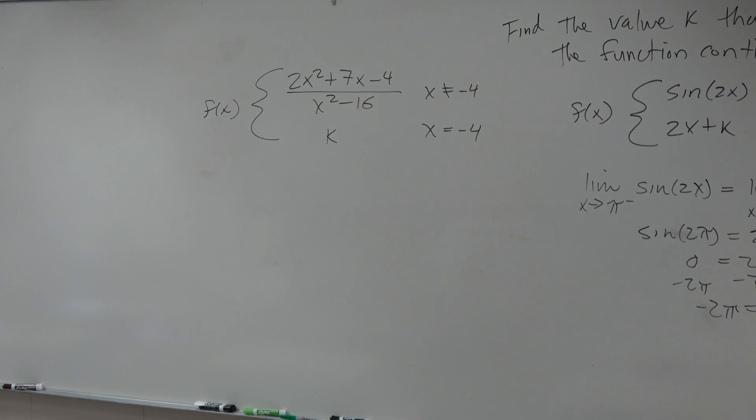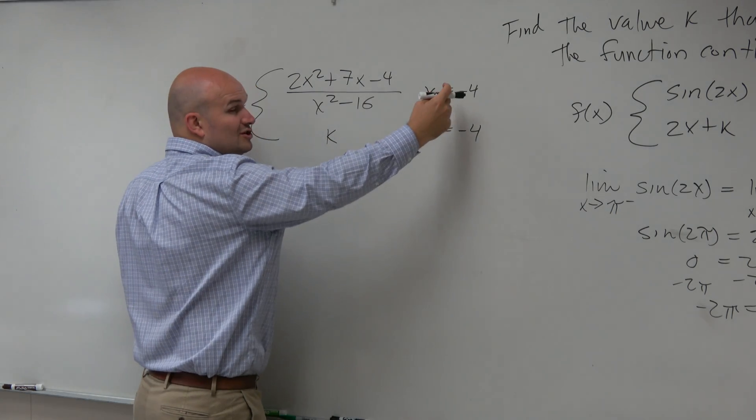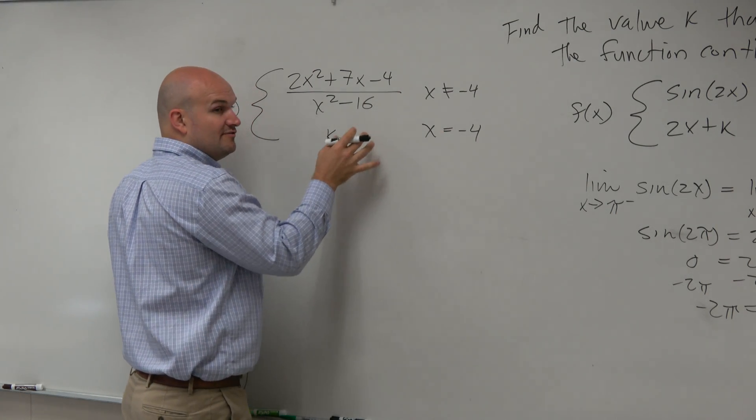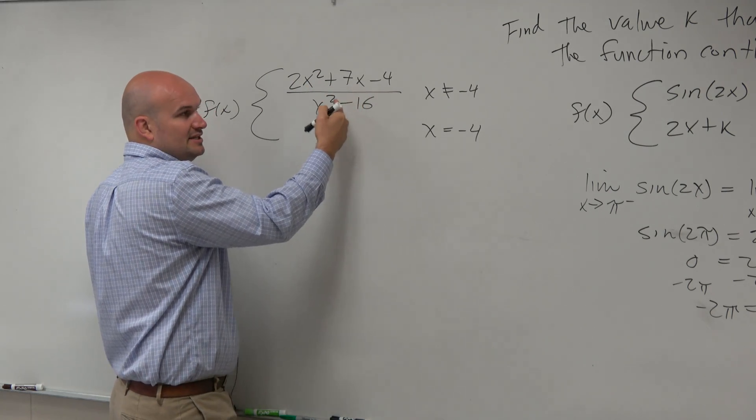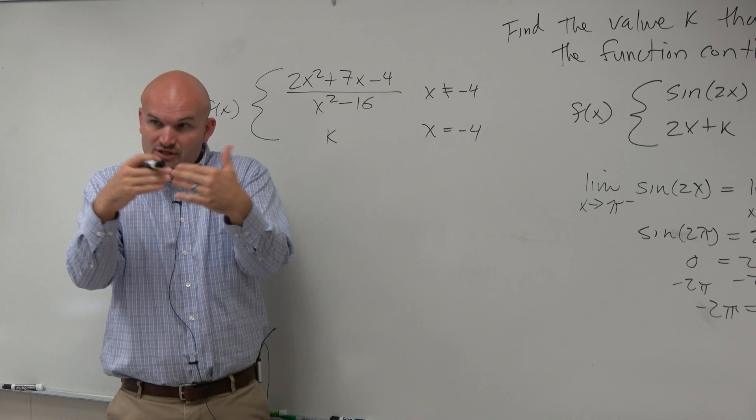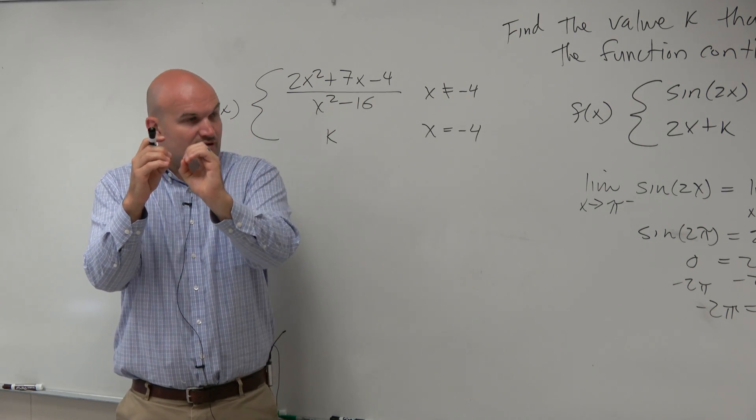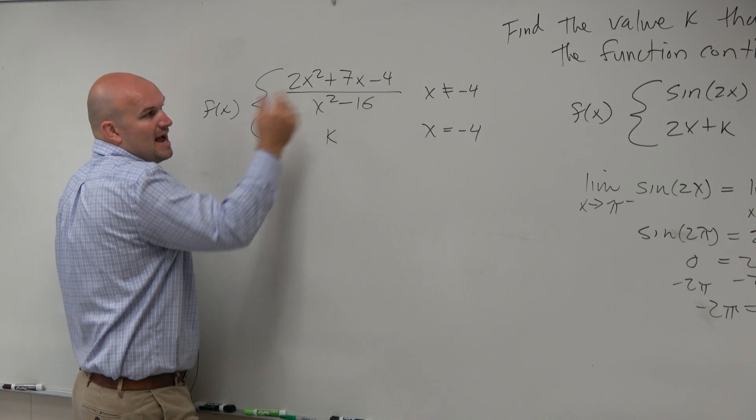So on this one, again guys, we automatically know that there is going to be, based on this information, we know there's a hole at negative 4. So therefore, we need to figure out what is basically the left and right hand limits, which we know is just going to be a function. Whatever this function looks like, it's just going to be a value. There's just going to be a hole there. So we need to figure out what would be the value at negative 4.